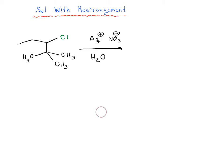Here's another example of an SN1 reaction that occurs with rearrangement. See if you can draw the product of this reaction. Work on it by yourself — press pause when you're ready to go, then press play and we'll go through it.